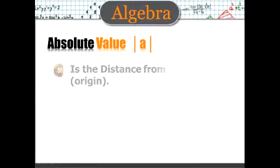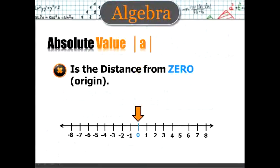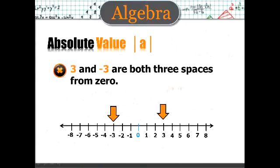Absolute value. An absolute value is the distance from 0 or the origin. And 3 and negative 3 are both 3 spaces from 0, so their absolute value is 3. And note how the bars are used to indicate the absolute value.